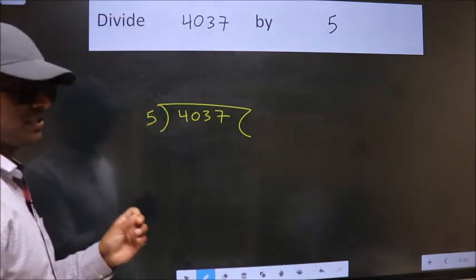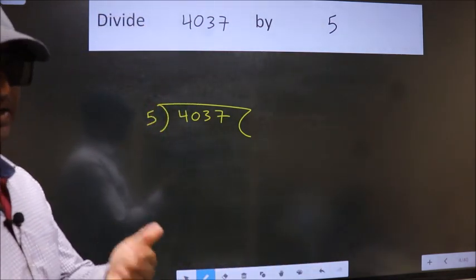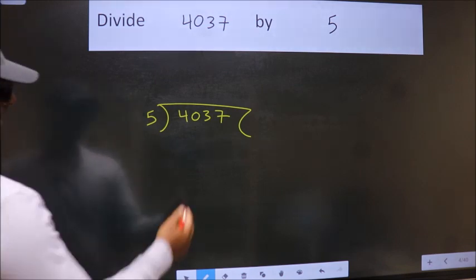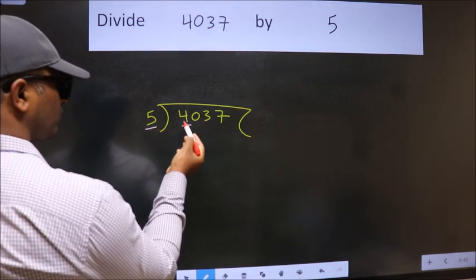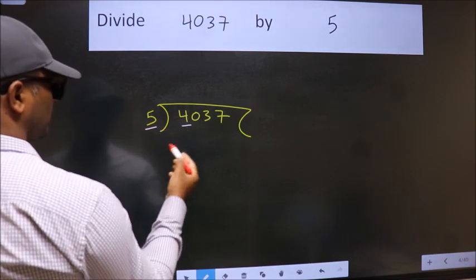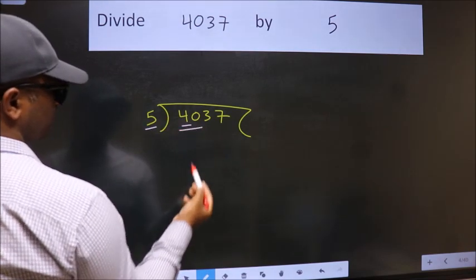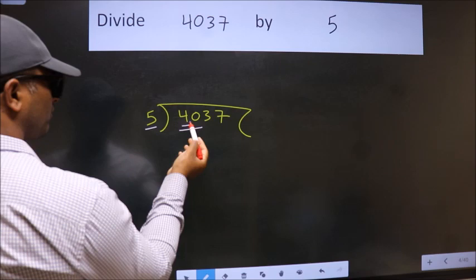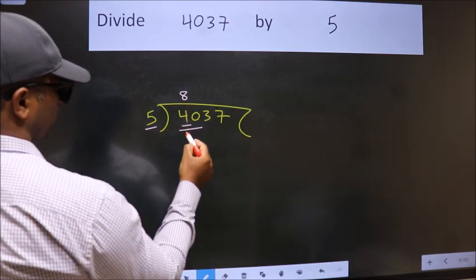This is your step 1. Next, here we have 4. Here 5. 4 is smaller than 5. So, we should take two numbers, 40. When do we get 40 in the 5 table? 5 eights are 40.